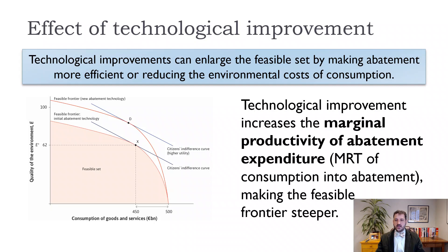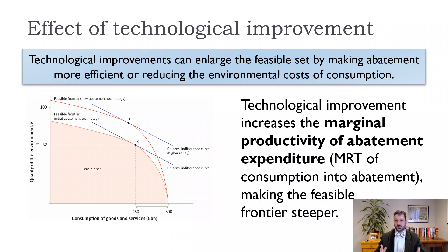If we think about technological improvement, we discussed this in earlier chapters when thinking about production functions. Technological improvements allow us to do more — get more output with fewer inputs. In this case, our output is quality environment, so a shift up in our feasible frontier allows us to get a cleaner environment at a lower cost.